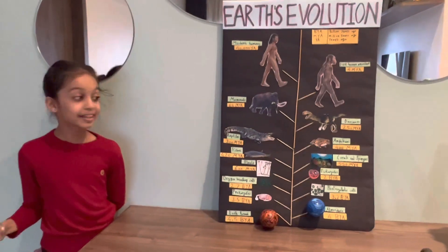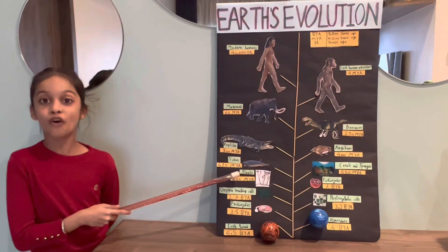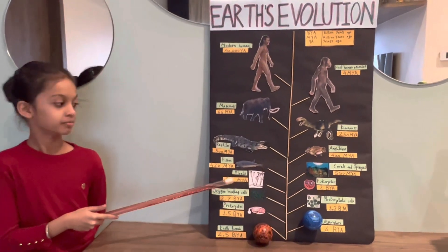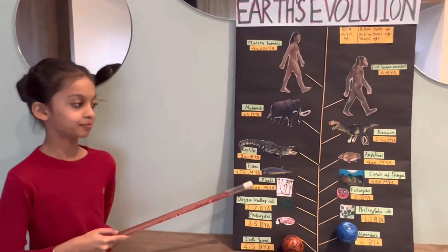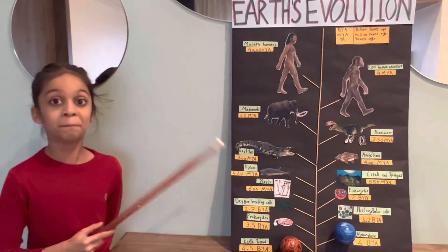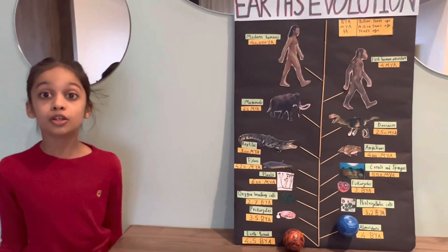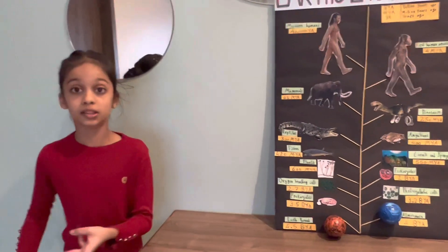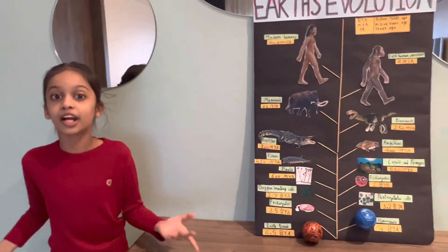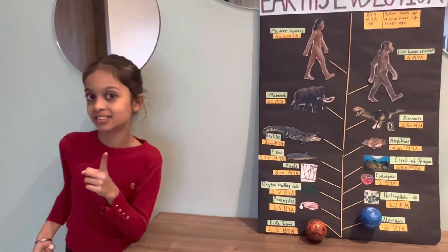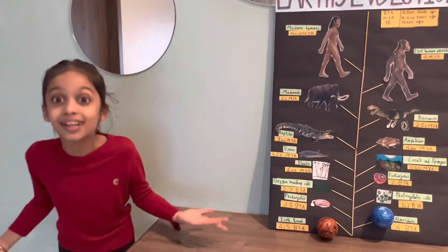Then came plants, one of the most important parts of the evolution of Earth. Plants came 600 million years ago. Then a blast happened on Earth, giving origin to corals, sponges, mollusks, fishes, etc. And do you know what blast that is? It is the Cambrian blast.